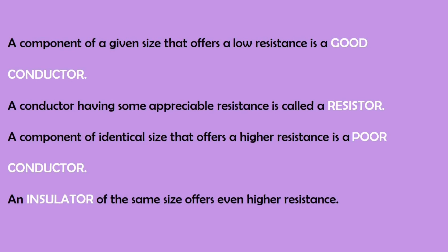So from this activity, one can categorize what is a good conductor, what is a bad conductor and insulator. A component of given size that offers a low resistance is a good conductor. A component of identical size that offers a higher resistance is a poor conductor. An insulator of the same size offers even more higher resistance. And here you can find a device called Resistor which is having some appreciable amount of resistance in it. Resistor is a device or conductor having some appreciable amount of resistance in it by which we can define it. Resistance is a property which resists the flow of charges.